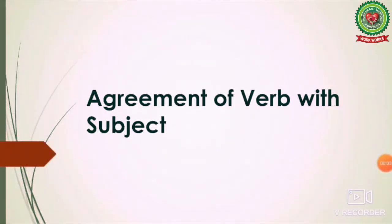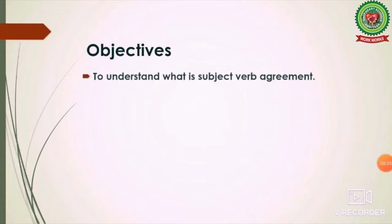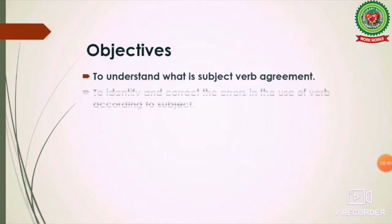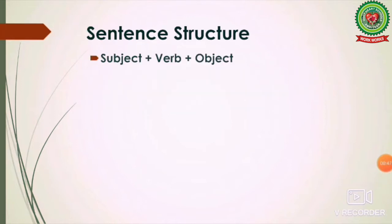Hello students, our topic for today is agreement of verb with subject. It simply means the verb and subject must agree in number — they both need to be singular or they both need to be plural. The objectives of this topic are: first, to understand what subject-verb agreement is, and by the end of this video you will be able to identify and correct errors in the use of verb according to the subject. First, let us discuss sentence structure.